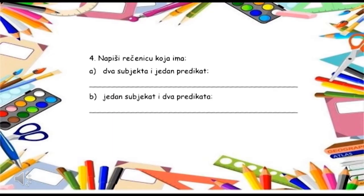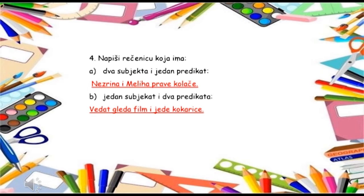Četvrti zadatak glasi ovako: Napiši rečenicu koja ima – pod A: dva subjekta i jedan predikat, i pod B: jedan subjekat i dva predikata. Rečenice bi mogle da glase ovako: Nezrina i Meliha prave kolače. Vedat gleda film i jede kokice.